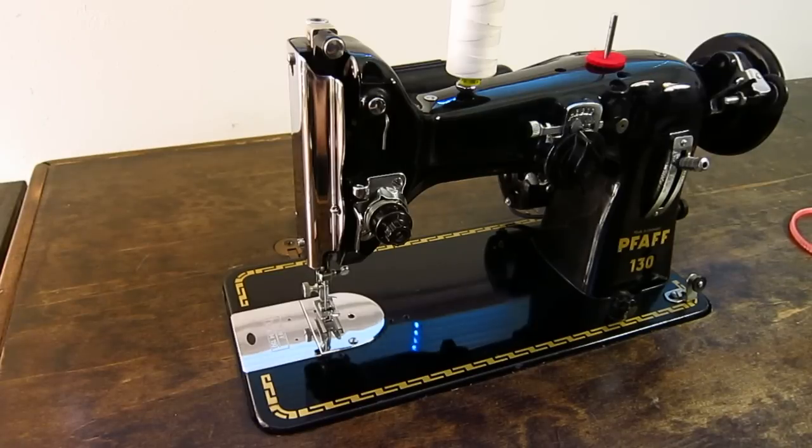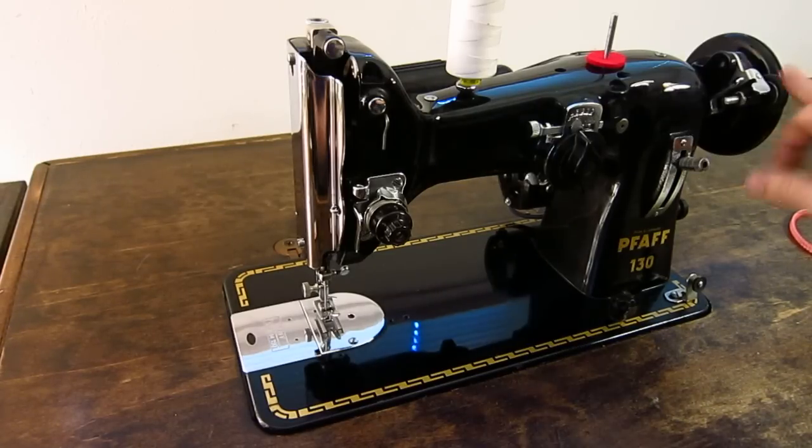Everything has been totally serviced on the motor so it's functioning as if it was new, and the wiring including the power plug, the foot control cable, everything is all brand new. New bobbin winder tire.